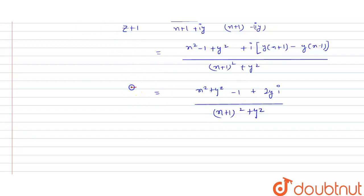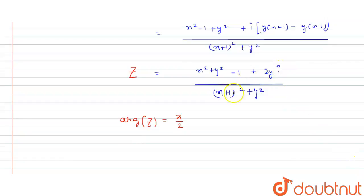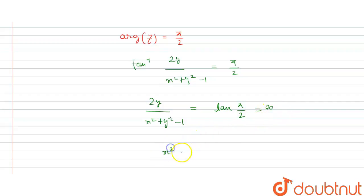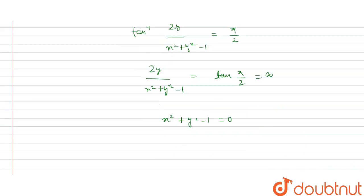Now we find the argument of this Z, which is given as pi by 2. The argument is tan inverse of (imaginary part over real part). The denominator cancels, so this becomes tan inverse of 2y divided by (x squared plus y squared minus 1) equals pi by 2. Since tan(pi by 2) equals infinity, we need 2y divided by (x squared plus y squared minus 1) to equal infinity. This means the denominator x squared plus y squared minus 1 equals zero, so x squared plus y squared equals 1.